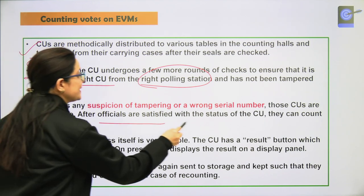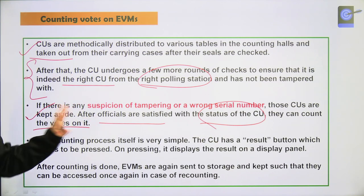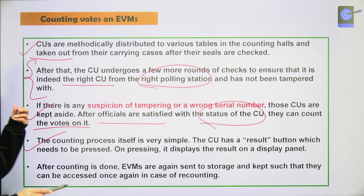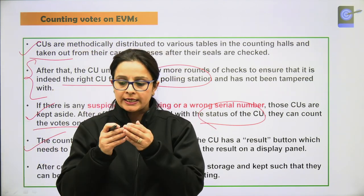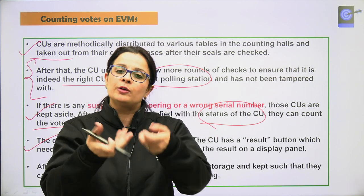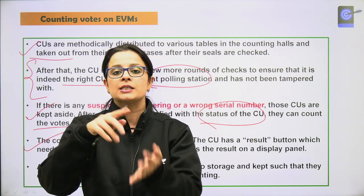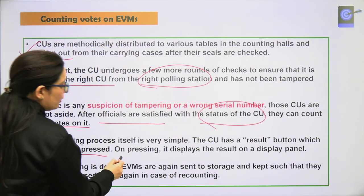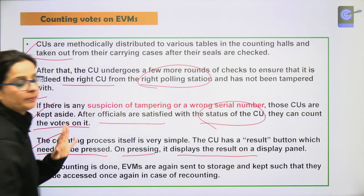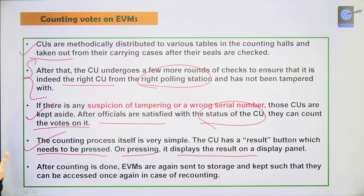The counting process itself is quite simple. A result button on the CU is pressed, and it displays the result on the display panel — the tallied votes for each candidate appear. After counting, the EVMs are sent back to storage and kept so that if re-counting is needed, they can be accessed again.